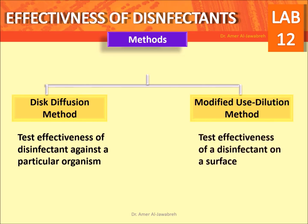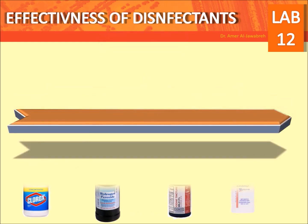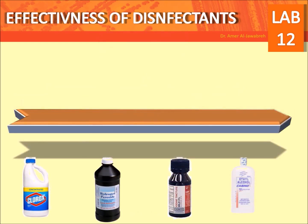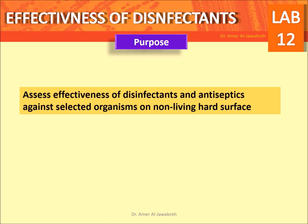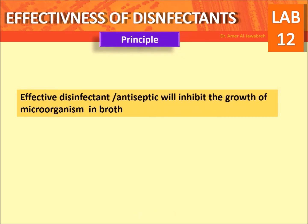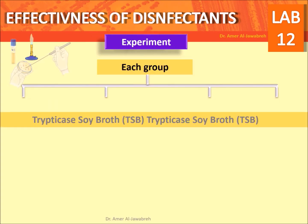The modified use dilution method tests the effectiveness of a disinfectant on a surface. Purpose: to assess the effectiveness of disinfectants and antiseptics against selected organisms on a non-living surface. Principle: an effective disinfectant or antiseptic will inhibit the growth of microorganisms in broth.